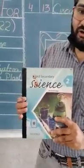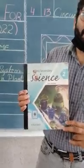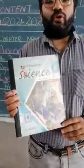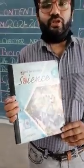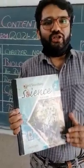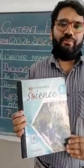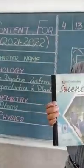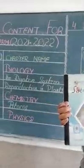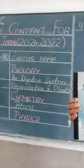This book is divided into three portions: biology, chemistry, and physics. From each portion we will study different chapters in midterm, and the remaining chapters we will study in the final term session.